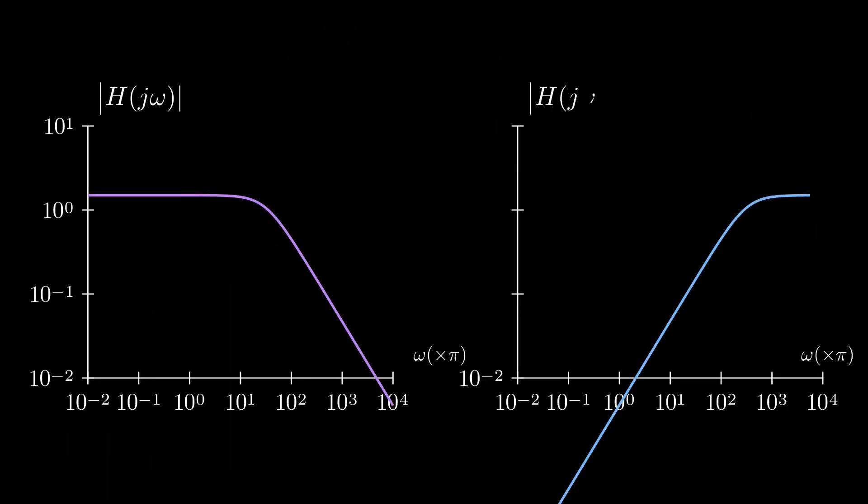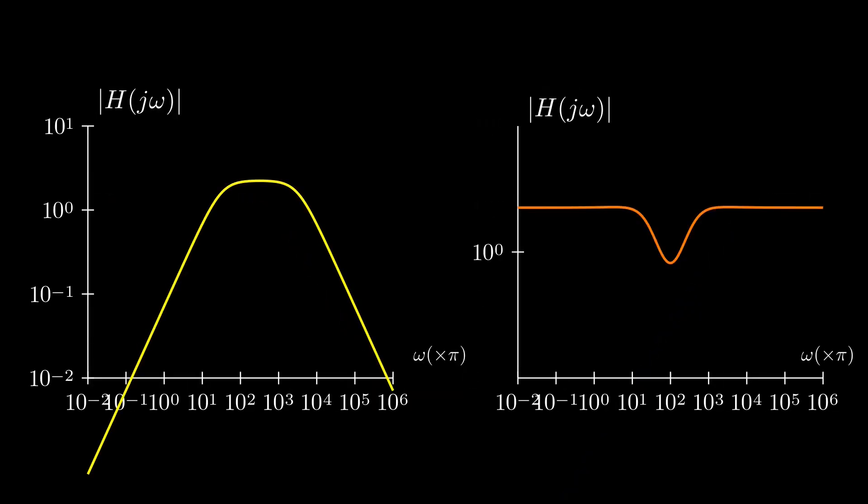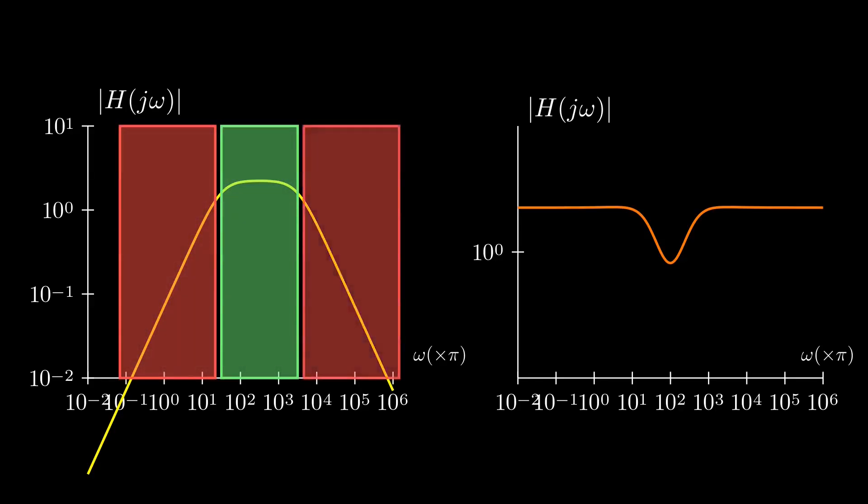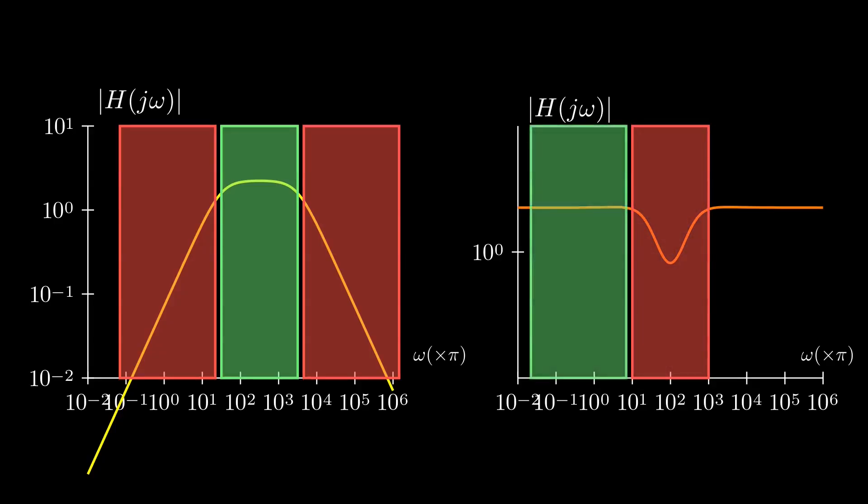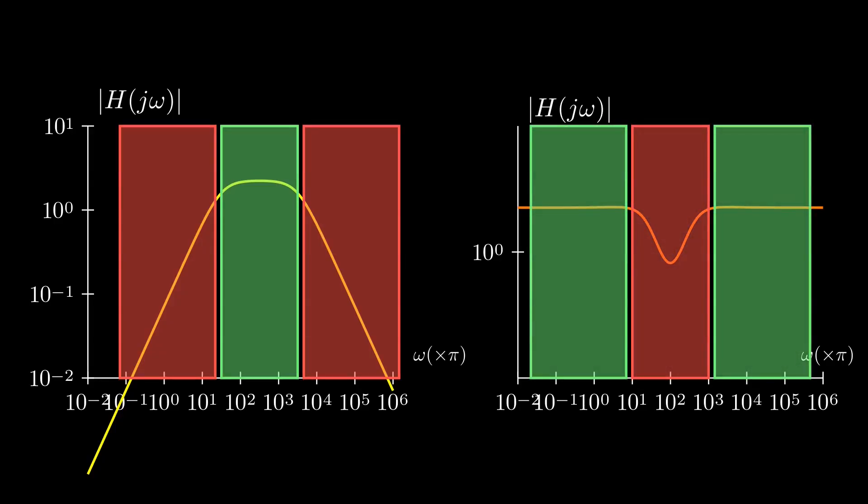If we combine both high-pass and low-pass filter, we can end up with two possibilities. The band-pass filter and the band-reject filter. The band-pass filter only allows a specific range of frequencies to pass or amplify. The band-reject filter works in the opposite way. It weakens a specific range of frequencies and amplifies or allows the rest.